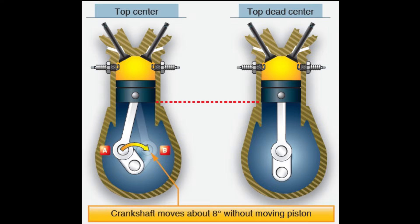Top Dead Center is a piston and crankshaft position from which all other piston and crankshaft locations are referenced. When a piston is in the top dead center position, the crankshaft is also in the center of the no-travel zone. The piston is in a position where a straight line can be drawn through the center of the crankshaft journal, the crank pin, and the piston pin.